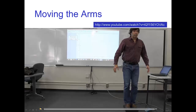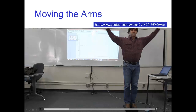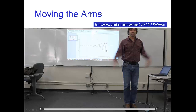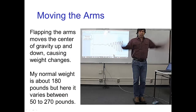In the next example, I'm raising and lowering just my center of gravity by flapping my arms. Watch the screen in the back — you see the graph and how my weight is varying up and down as I'm flapping my arms. My normal resting weight would be about 180 pounds, but these weight changes go all the way down to about 50 pounds and up to about 270 pounds, simply by raising or lowering my center of gravity by flapping my arms.